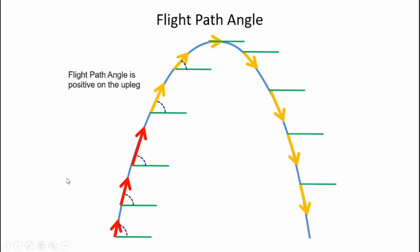The flight path angle is positive on the up leg. So measuring from the local horizontal, I measure upwards to the velocity vector. On the down leg, it's going to be negative. That means I'm measuring from the local horizontal downward to the velocity vector.